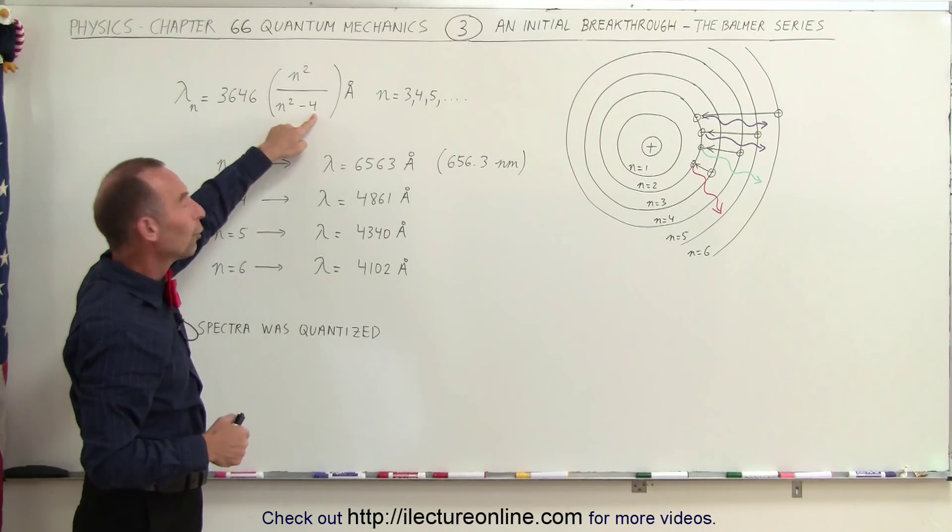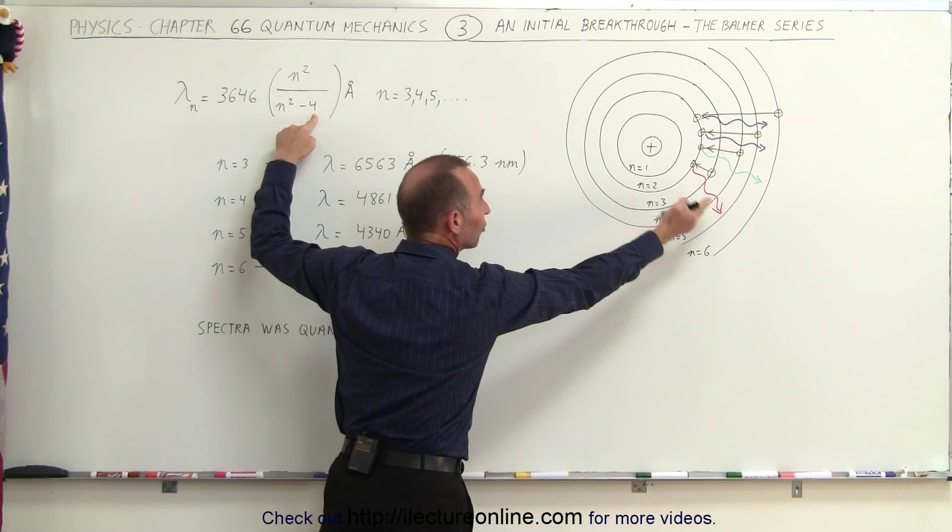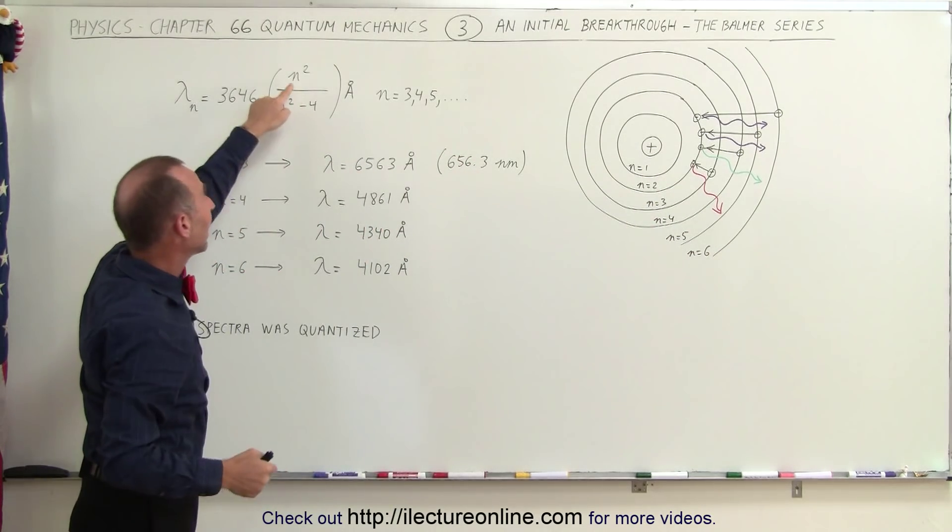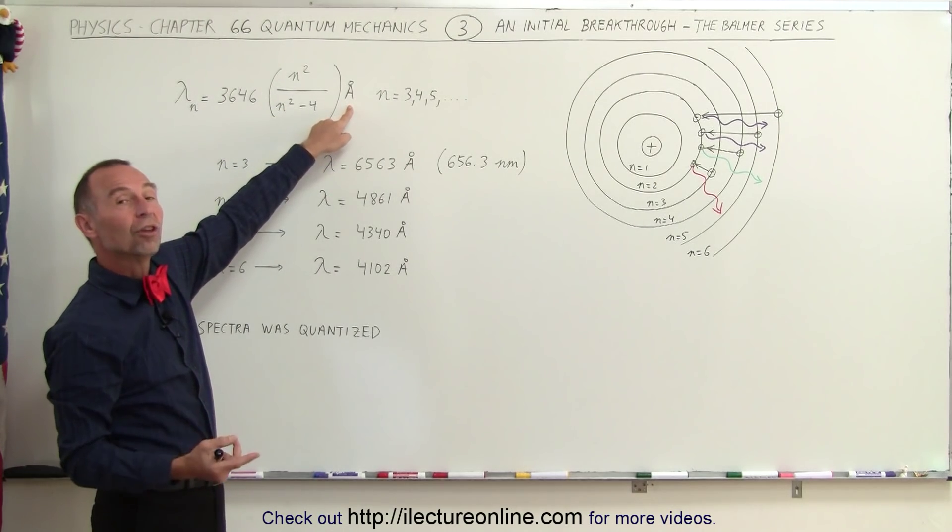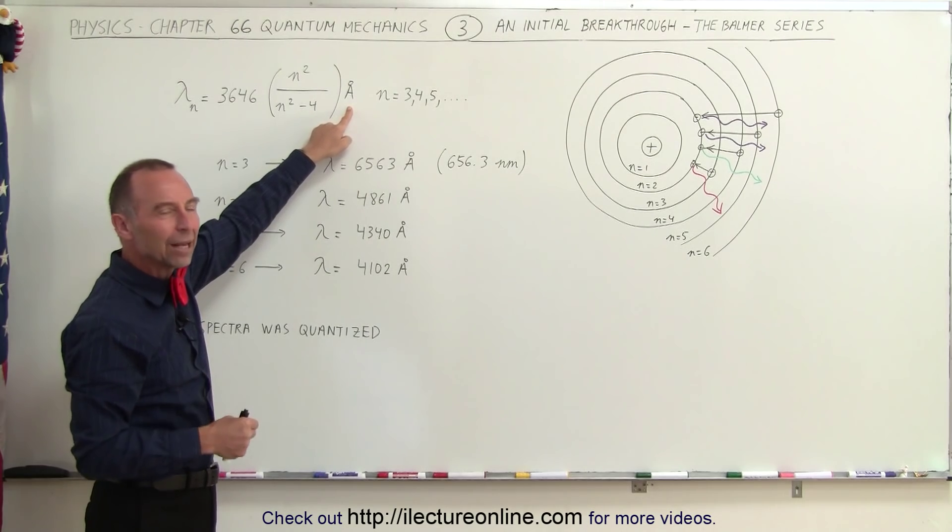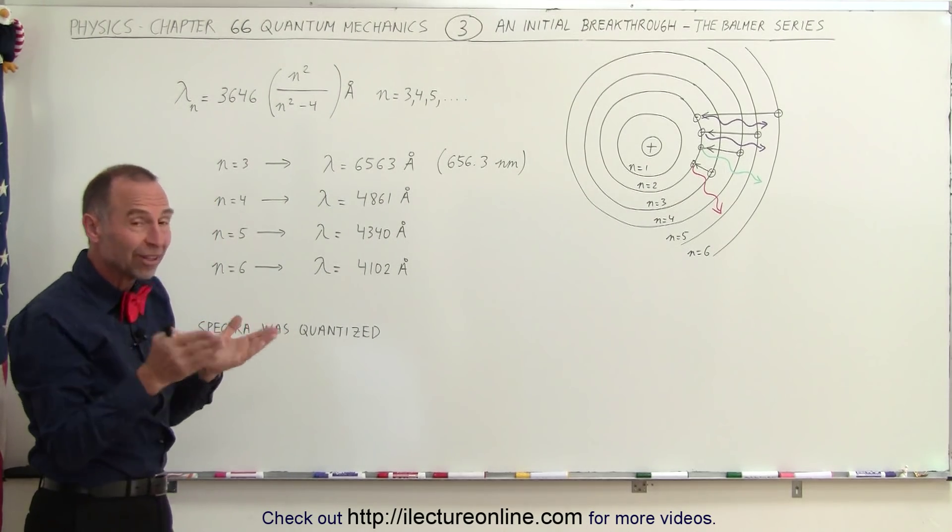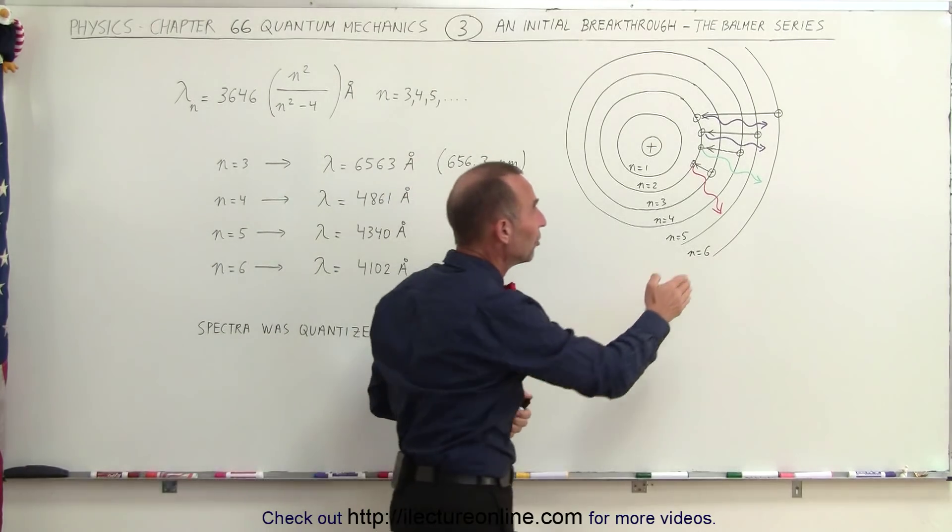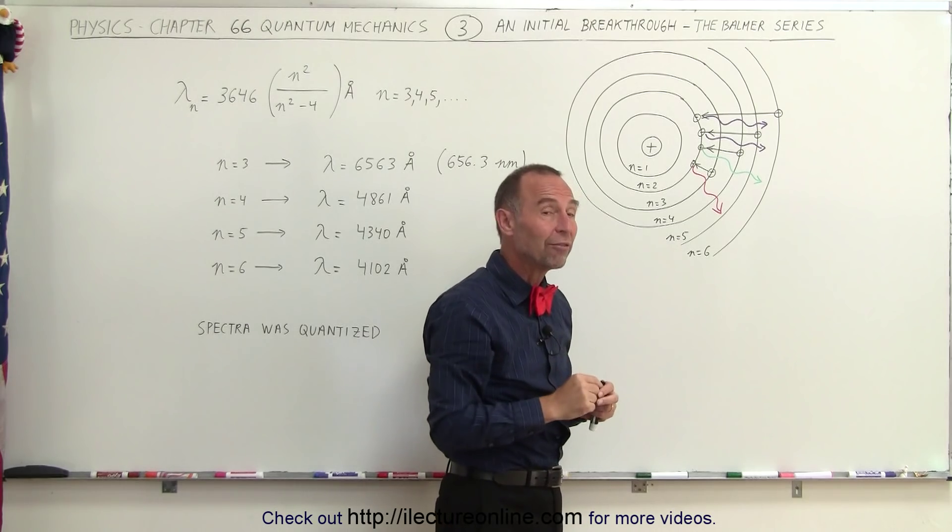And so, therefore, when he used four was, of course, the two squared from the second level to which things jumped down to. And so n would be a number higher than two, three, four, five, and so forth. And then, of course, the units they used back then were angstroms. One angstrom is one-tenth of a nanometer. And so when he calculated these values, he was then able to associate the specific energies that were emitted in the form of various colors to that particular wavelength.